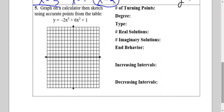Number 5 says graph on a calculator, then sketch using accurate points from the table. We plug the equation into our calculator and look at the table. We should get points at negative 1 comma 9, 0 comma 1, 2 comma 9, and then 3 is going to be around negative 30-something, just way off. I'm going to connect the dots.